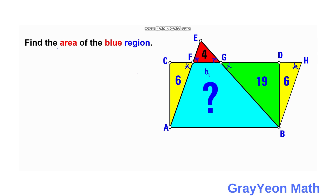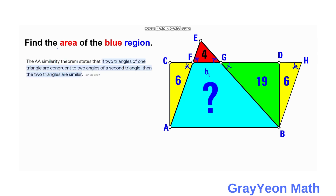The angle at F and G of the red triangle corresponds to the combination of the green and yellow angles, and they are congruent. If two angles of these triangles are congruent to two angles of another triangle, then the two triangles are similar — that is the Angle-Angle similarity theorem. So we have proved that the combination of the yellow and green triangle and the red triangle are actually similar.